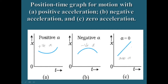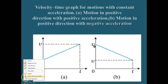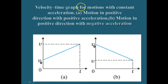So all three cases are represented using the position-time graphs. Now let us see the velocity-time graph for motions with constant acceleration — we are going to see the velocity-time graphs for some of these simple cases.